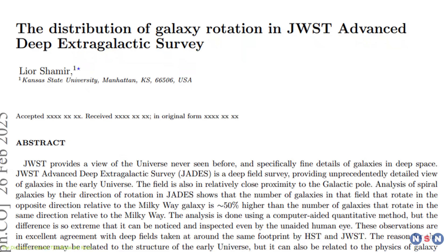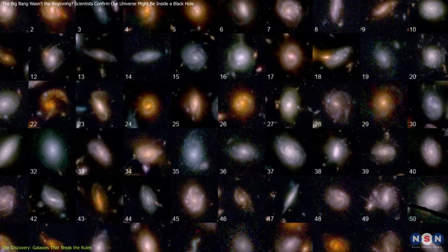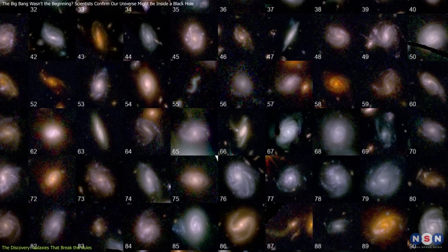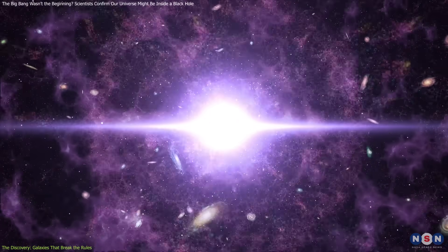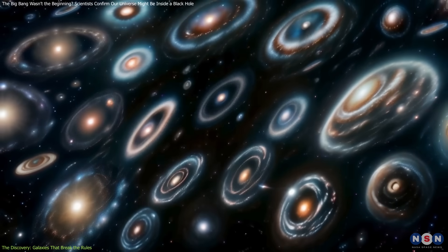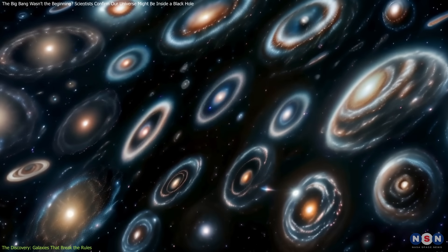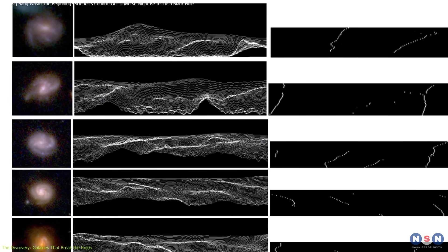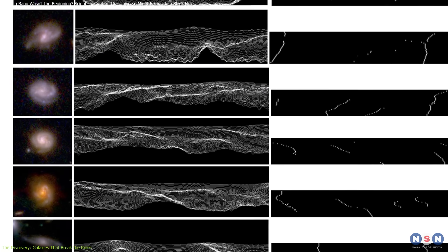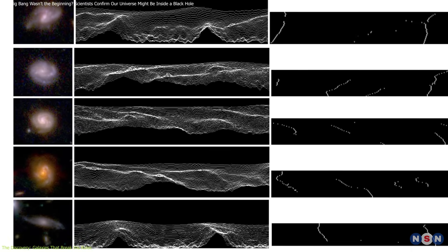In this study, led by Lior Shamir at Kansas State University, researchers examined 263 galaxies captured by JWST. These galaxies formed roughly 300 million years after the Big Bang, making them some of the earliest cosmic structures ever observed. The key finding? About 60% of these galaxies rotate clockwise, while only 40% rotate counterclockwise.